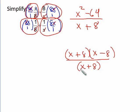Now this is really times 1 here, so I can cancel these x plus 8's, they become 1, leaving me with a final simplified version of just x minus 8.